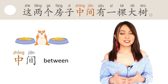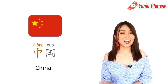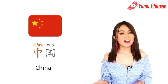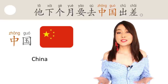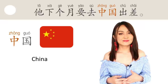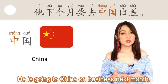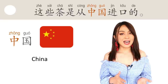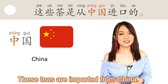下一个：中国。 Yes, it's China. Literally, it's 'middle country,' since in ancient times China was in the middle of the other countries they knew about. I know you already know this word, but we can use example sentences to practice. 他下个月要去中国出差。 He's going to China on business next month. 这些茶是从中国进口的。 These teas are imported from China.